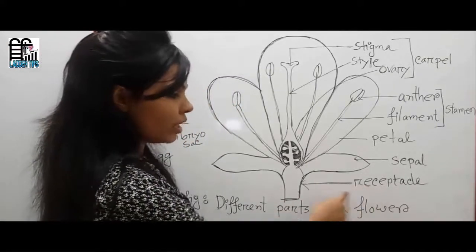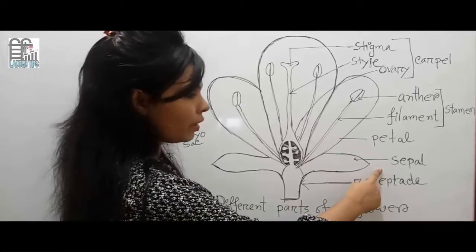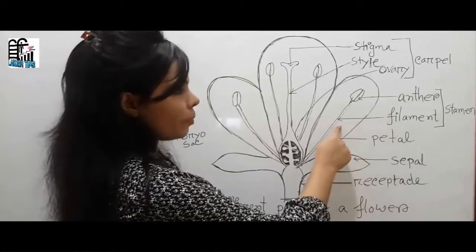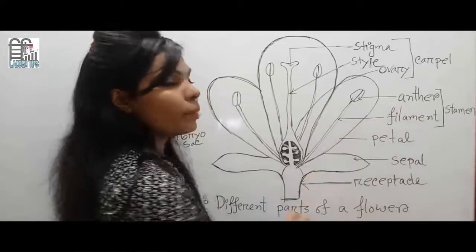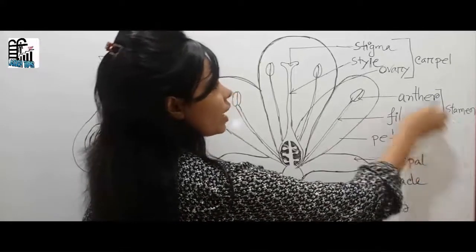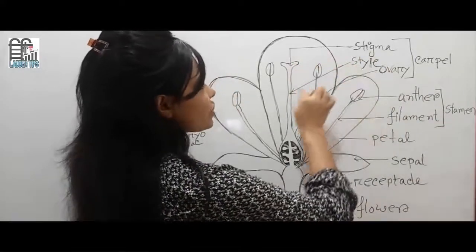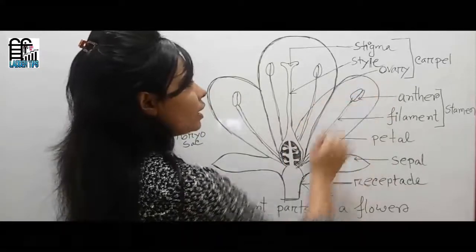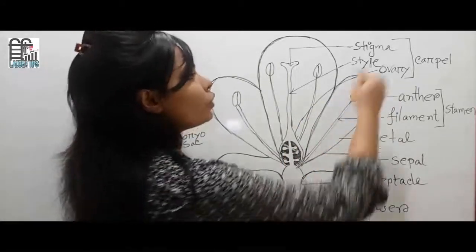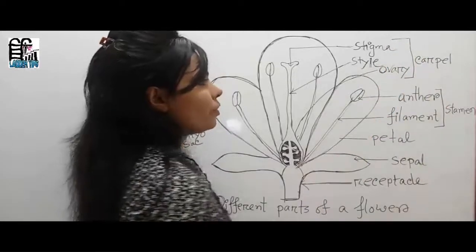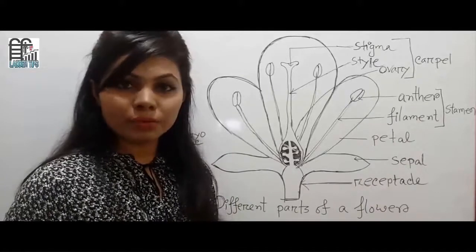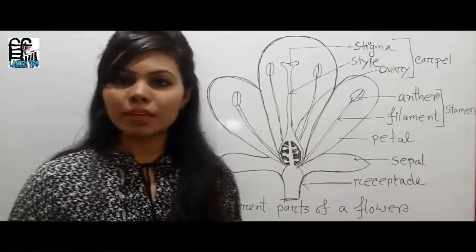So again, the different parts of a flower: first, receptacle; then sepal; then petal; then anther and filament, which are the male reproductive organs known as the stamen; and stigma, style, and ovary, which are the female reproductive organs known as the carpel. The carpel and the stamen are the essential whorls of a flower. Thank you.